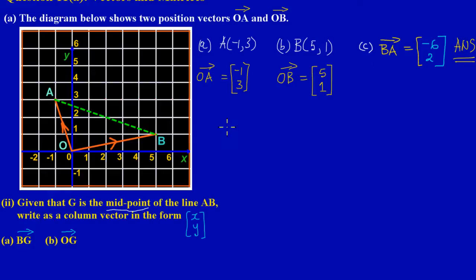So in part two, to find what I need to find, I need to find BG. Since I've found BA and the point G is halfway in between, then it simply means that if I take a half of my BA, then I'll know the point where my G will lie. So BG is really taking a half of my vector [-6, 2].